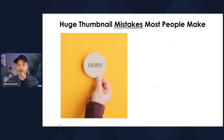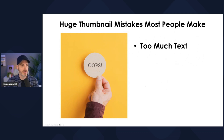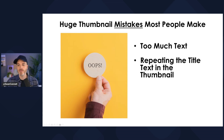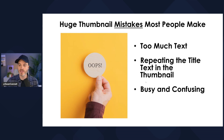Some mistakes people make on thumbnails is they do too much text — see it all the time. There's like 50 words, small text, big text, logos. Notice I have two words: '2024 updates' and one logo. Keep it simple. Sometimes repeating the title and the thumbnail text works well — my title might be 'Six trends you need to know on YouTube this year,' so they're two different things that work together.